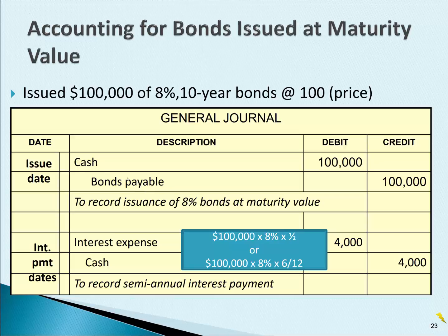Notice that on the issue date we increase bonds payable, and then over the years, as the interest payments are made, the bonds payable liability stays the same. Years later, when we pay off the bonds payable, this will go away with a debit.